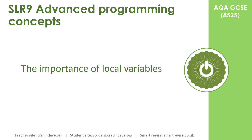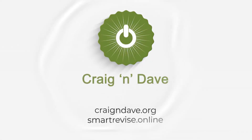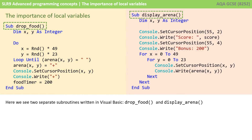In this video, we take a look at the importance of local variables. Here we see two separate subroutines, written in Visual Basic. The left one is called DropFood and the right one is called DisplayArena. We're using these real pieces of code as an example to explore local variables.